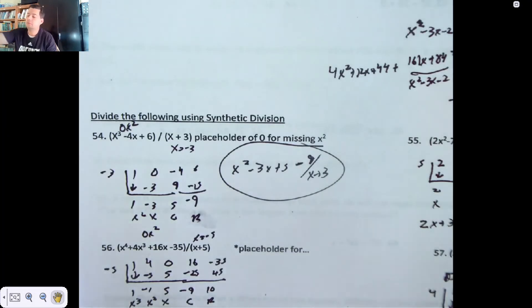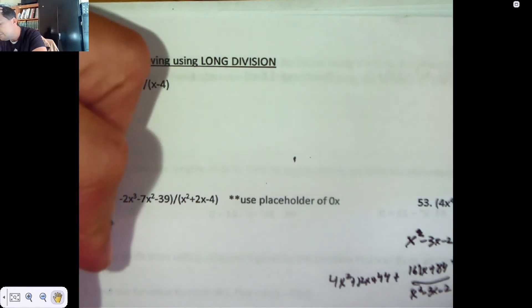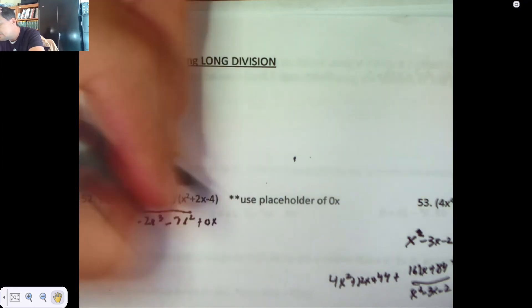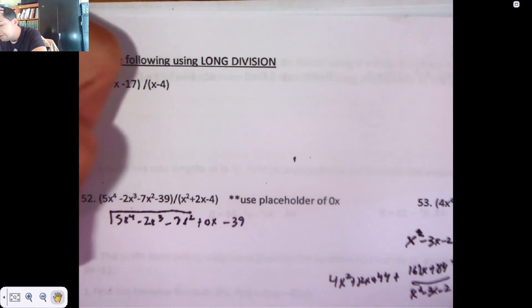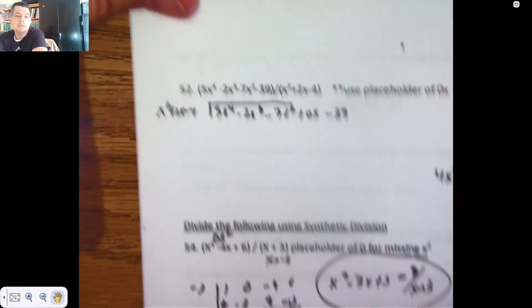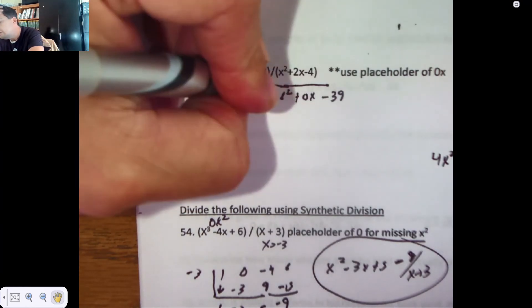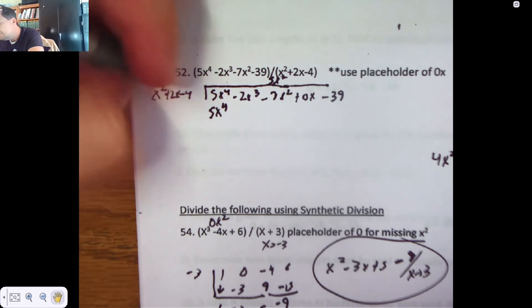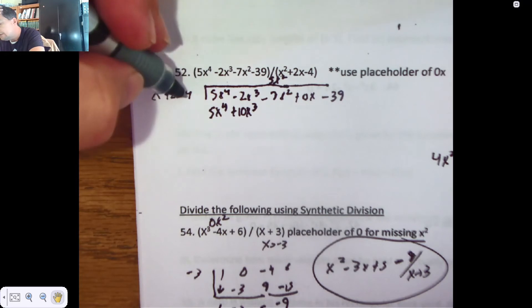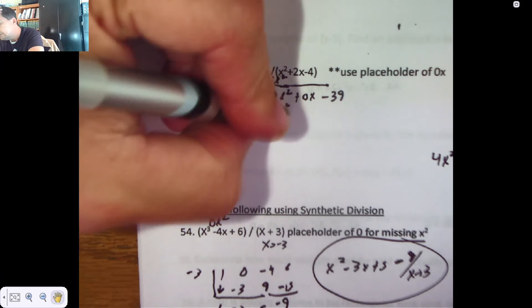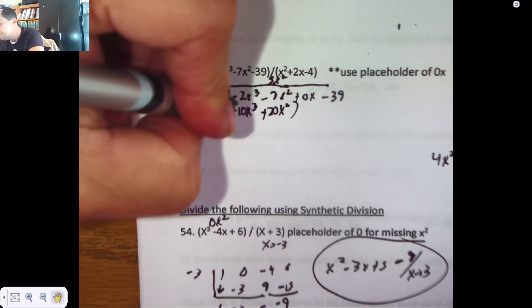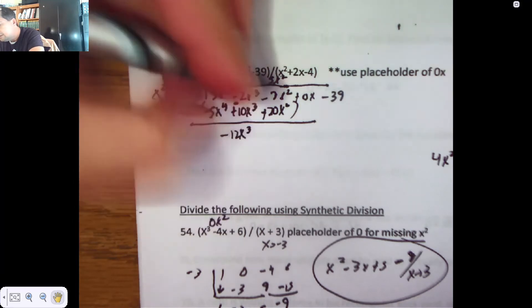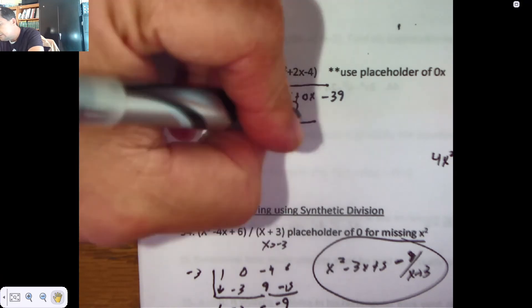Alright. Problem 52. More long division. It says you need a placeholder for 0x, so you should probably do that. 5x to the 4th minus 2x cubed minus 7x squared plus 0x minus 39. We're dividing by x squared plus 2x minus 4. Now, the first thing you're going to do is you're going to multiply by 5x squared because you want to become 5x to the 4th. So, 5x to the 4th plus 10x cubed. And again, you wrap before you subtract. There are no x to the 4th. I have negative 2 minus 10, that's negative 12x cubed. And I have negative 7 plus 20, which is going to be 13x squared. I'm going to go ahead and bring down my 0x.